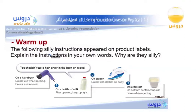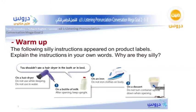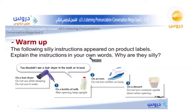Warm-up: The following silly instructions appear on product labels. Explain the instructions in your own words and explain why they are silly. We have four products: a hairdryer, a bottle of milk, an iron, and a dessert can. These products are labeled with very ridiculous instructions that make us wonder how anyone even thought of them.